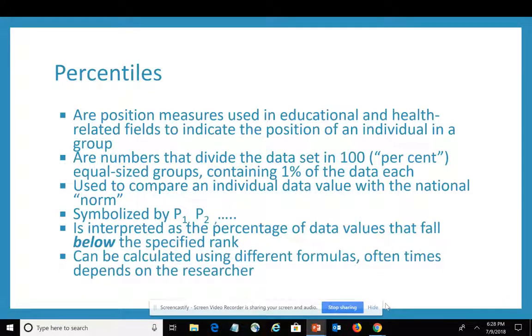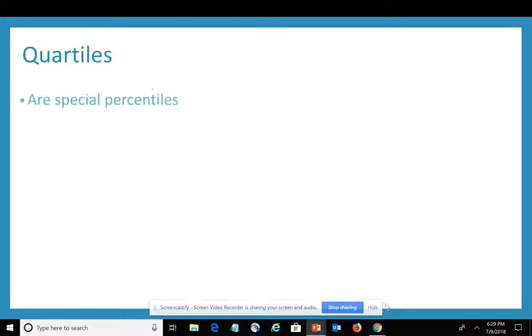One of the challenges with percentiles is there's a variety of formulas that can be used to calculate it, depending on the researcher, the textbook author, or the nature of the distribution—is it bell-shaped, is it skewed, and so forth. We're not going to get caught up in all those different formulas. We'll focus on the interpretation and look more specifically at a special type of percentile called a quartile.